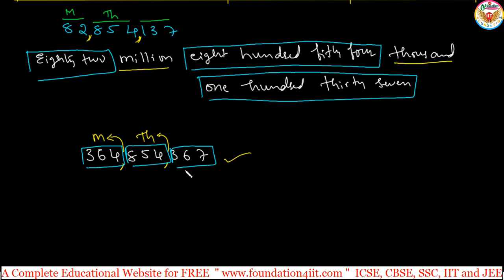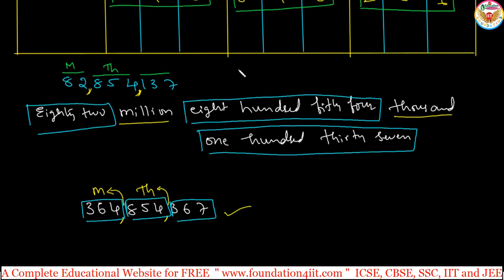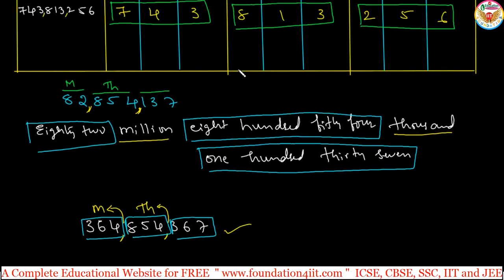In the international system, groups of three digits continue: after millions come billions, then trillions. To summarize the key difference: in the Indian system, after thousands we have lakhs and crores, but in the international system after thousands we have millions and billions — always in groups of three digits. This is the international system of numeration.